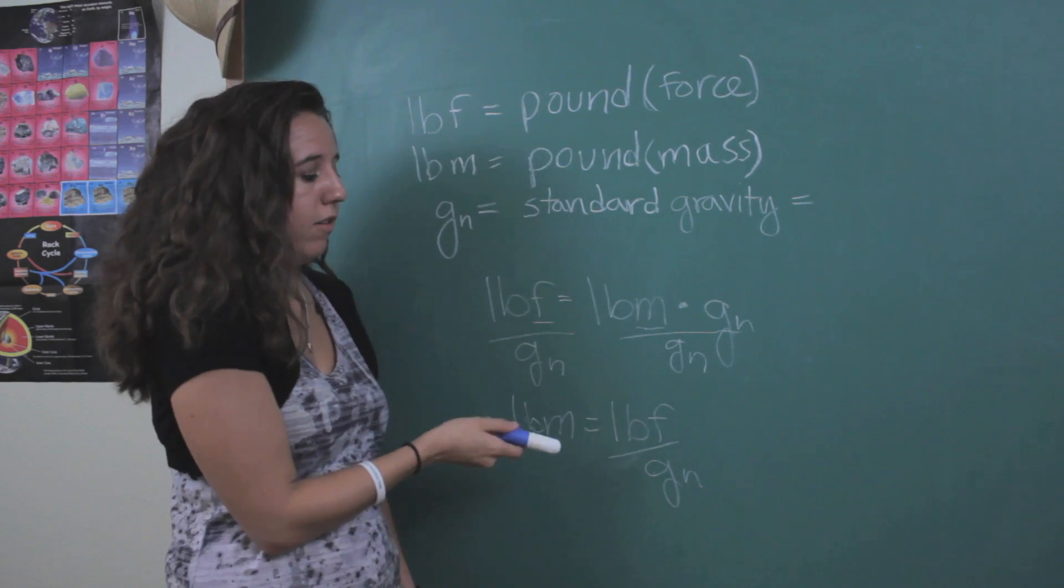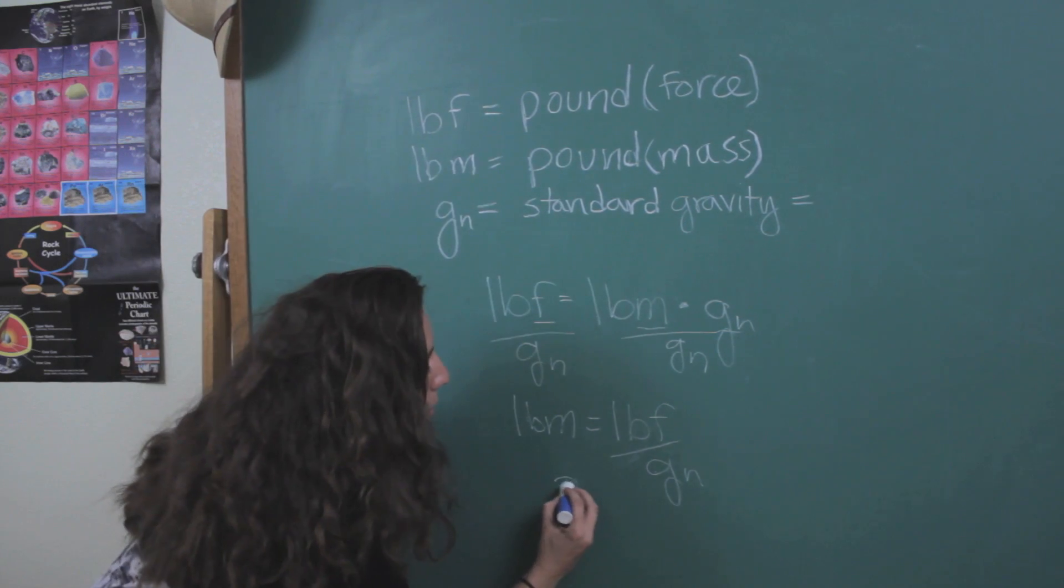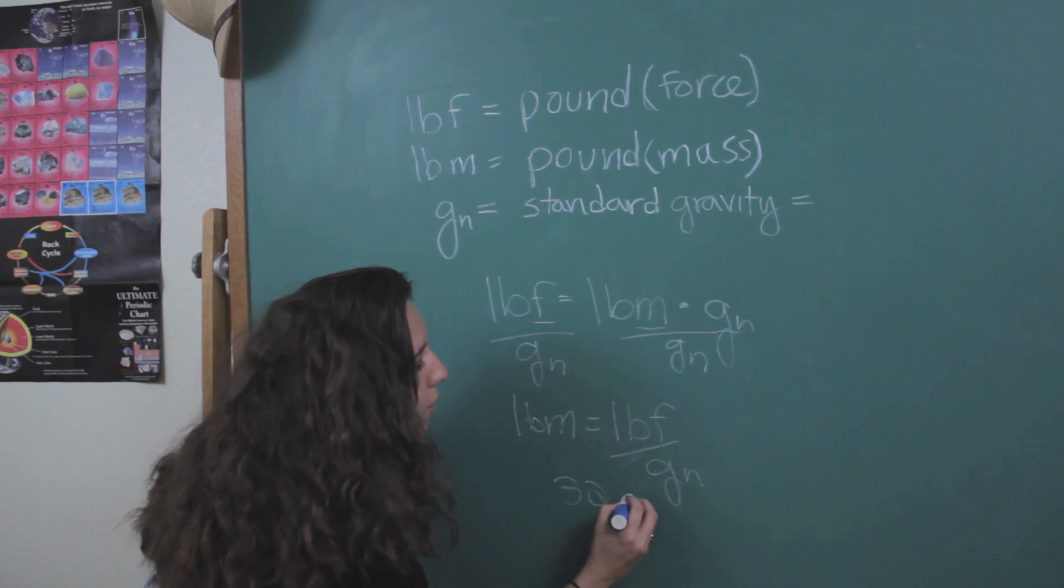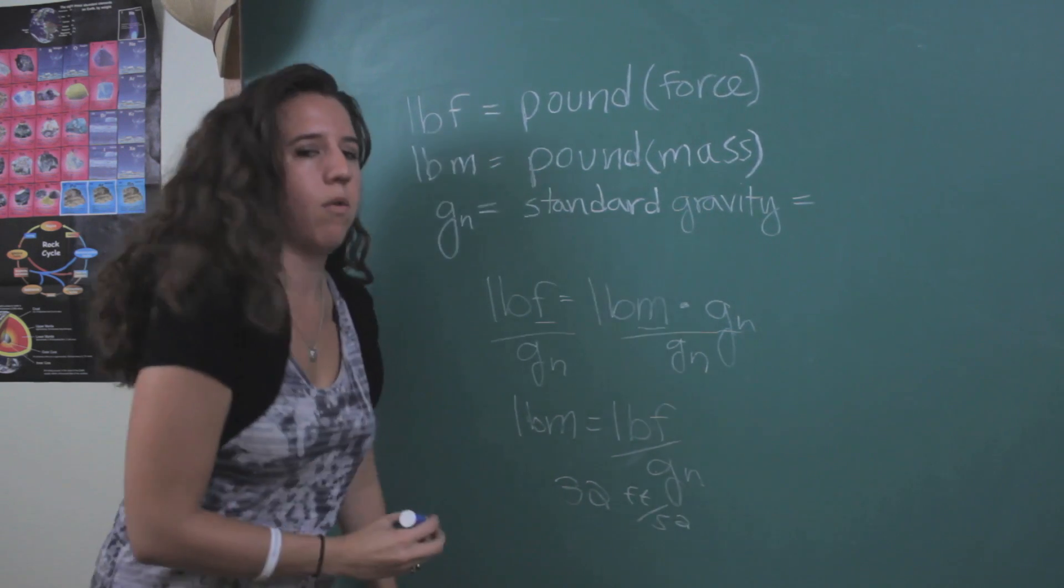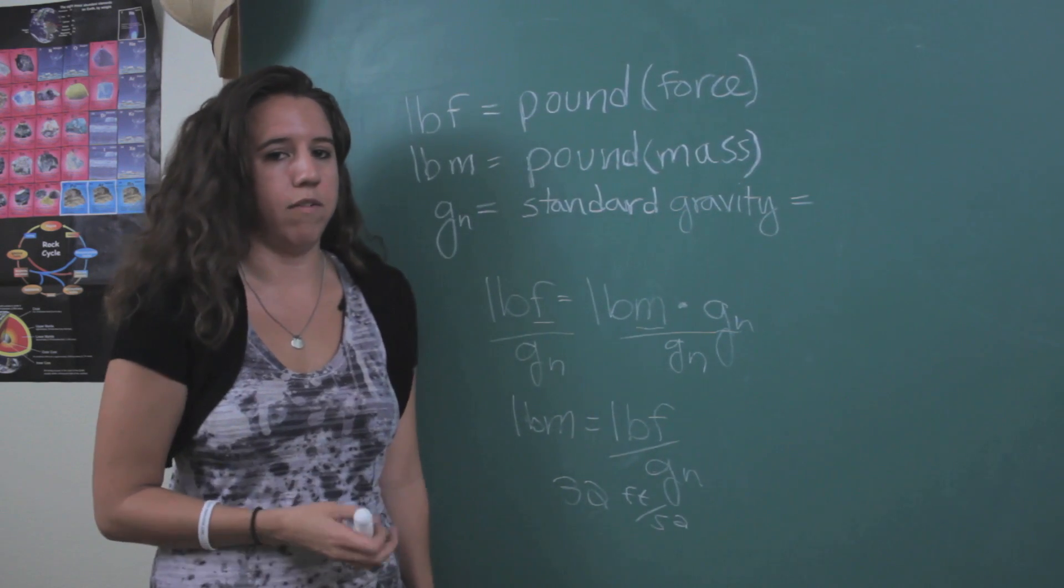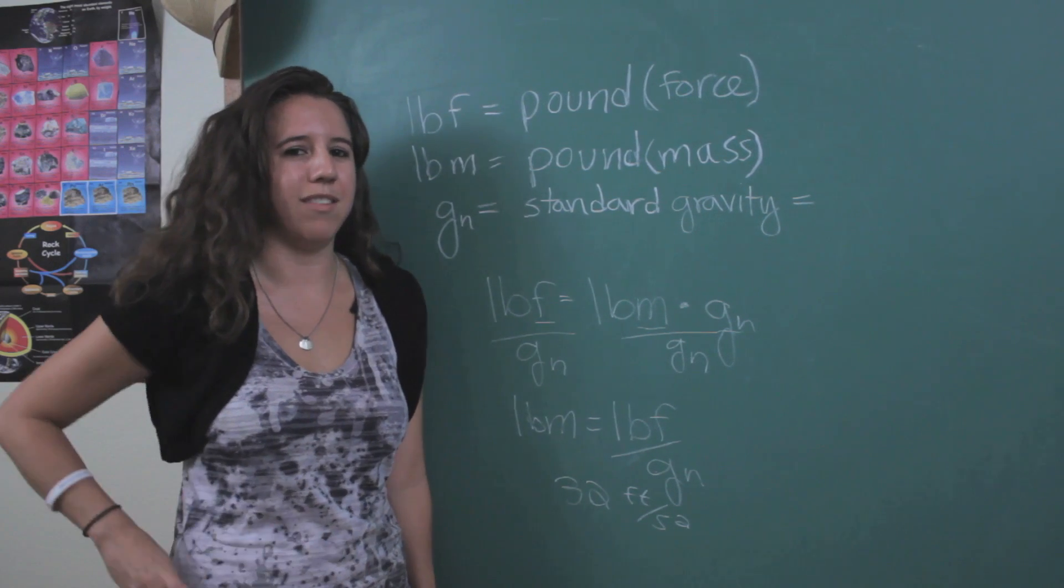And by the way, this constant is equal to approximately 32 feet per second squared, or 32.174 if you want it up to three decimal places accuracy.